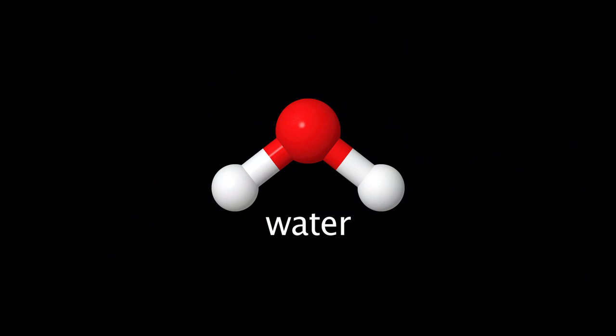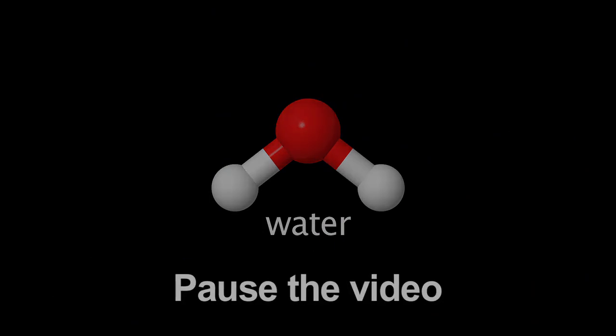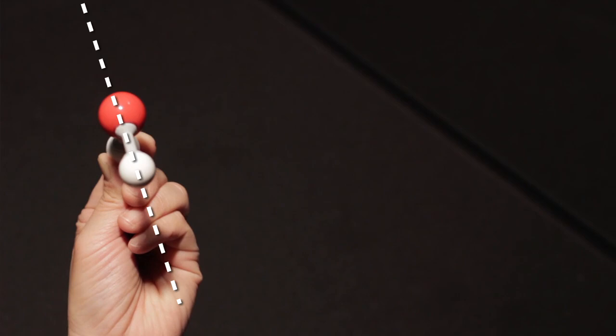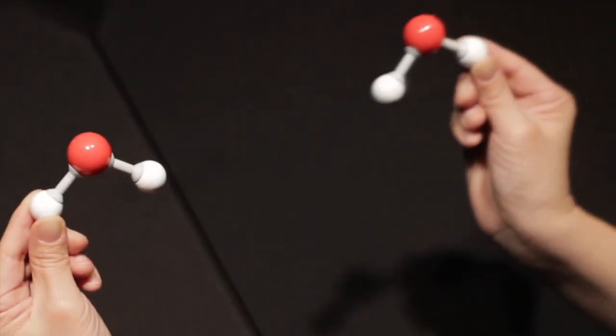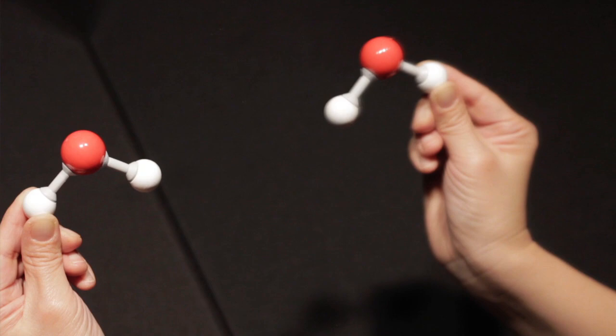Is water chiral? Pause the video here and try to answer this question. Here you see the chemical structure of water. As you can see, it has two planes of symmetry, and water is superimposable with its own mirror image, so it is not chiral.